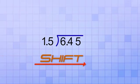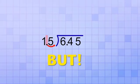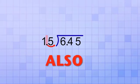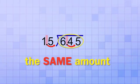We can just shift the decimal point in the divisor to the right until it's a whole number. But if we do that, then we also need to shift the decimal in the dividend the same amount to the right.